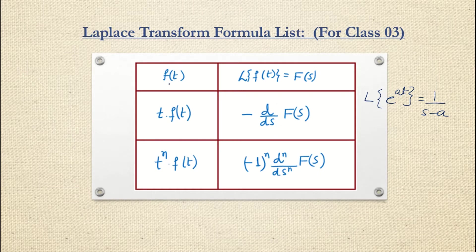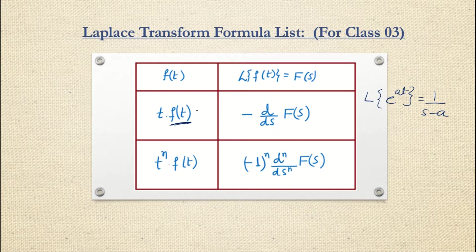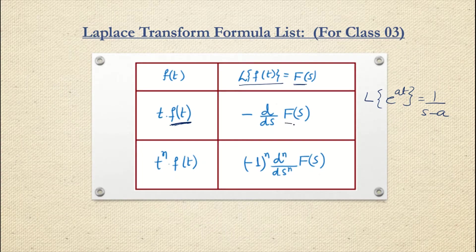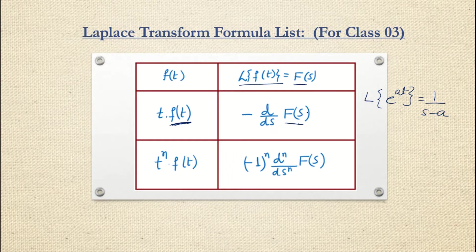In today's class we are going to see the function f(t) which is multiplied by t, and what we will be getting as the answer. If the function is f(t), we know that after performing Laplace transform we get the answer in the frequency domain — it will be a function in the s domain. Multiplication by t will result in negative of d/ds of that F(s) which we had got.